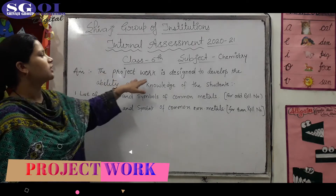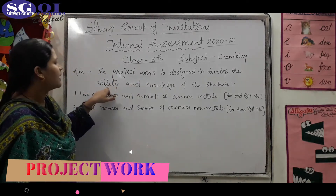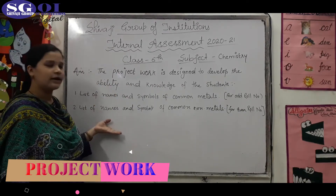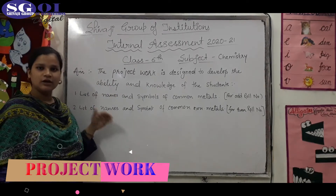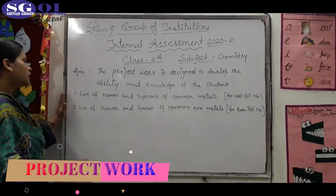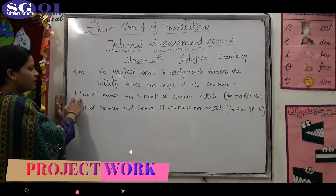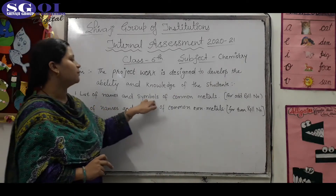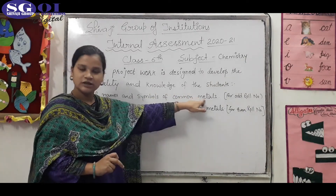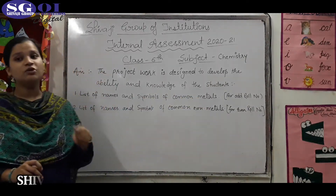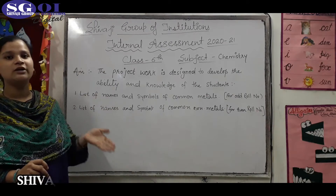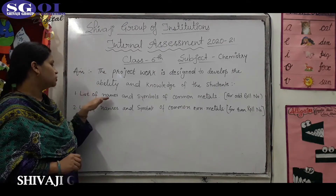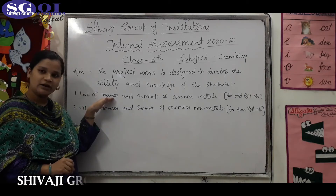The project work is designed to develop the ability and knowledge of the student. This is what you have to do in the project. For the first objective, you have to list the names and symbols of common metals. This is what we have to do in chapter 3 — common metals and non-metals. You have to write the names and list of metals.